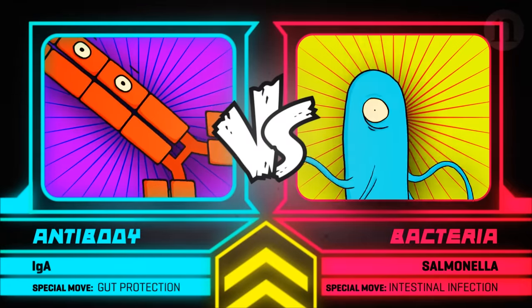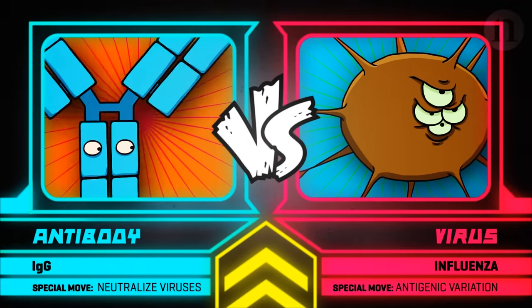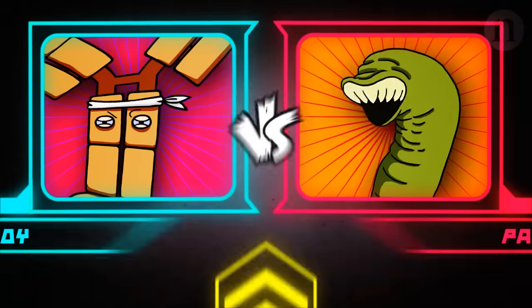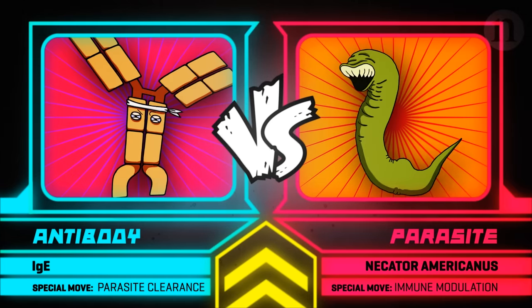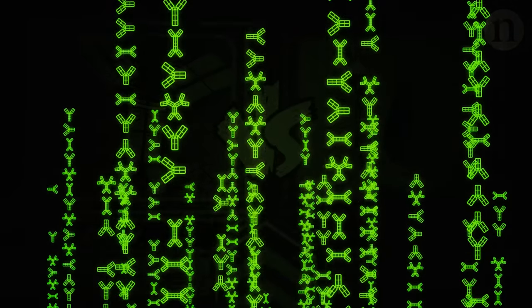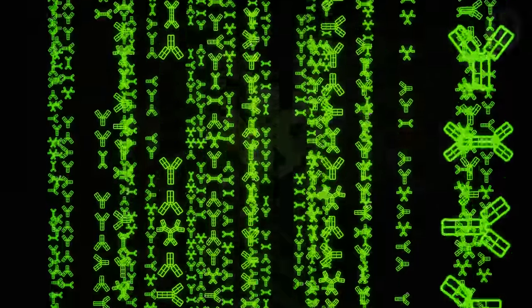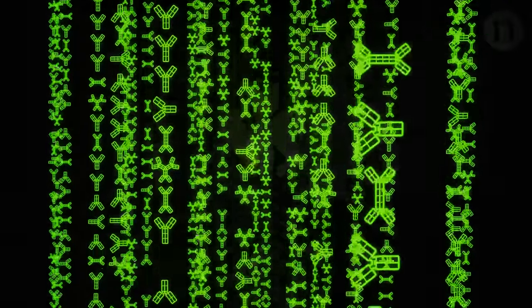The human immune system has to fight off an endless variety of bacteria, viruses, and parasites. And for each invader, it needs a specific antibody. Luckily, it can generate billions of them, each slightly different, ready for any disease.